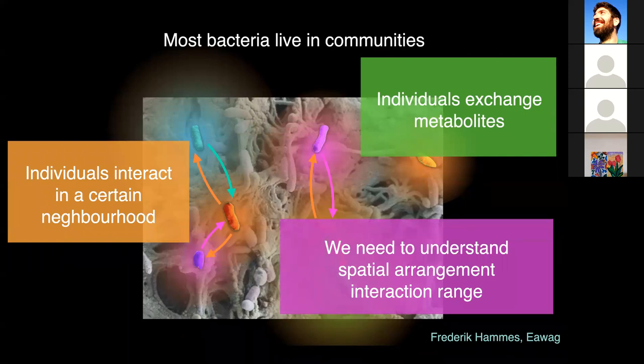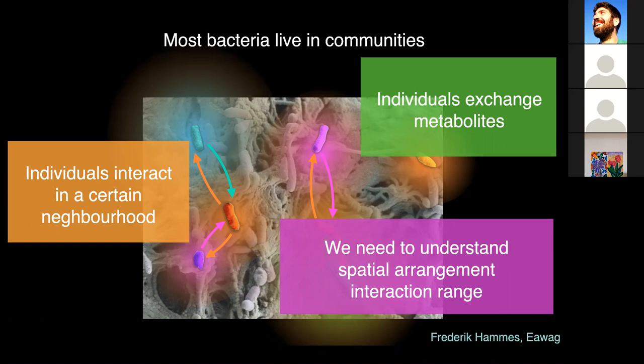All of these interactions together — the spatial interaction network — collectively determine what processes the community as a whole can perform. The question is, we might be able to observe the relative location of organisms, but how can we measure the interaction range between different species? This was the core of my interests when I started working in microbial communities.